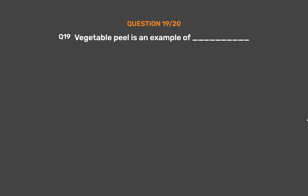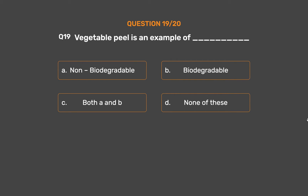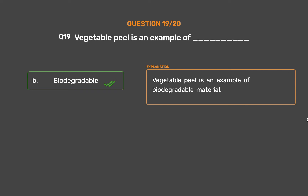Question Number 19. Vegetable peel is an example of ___. Option A: Non-biodegradable. Option B: Biodegradable. Option C: Both A and B. Option D: None of these. The correct answer is Option B: Biodegradable. Vegetable peel is an example of biodegradable material.